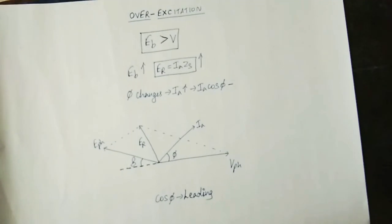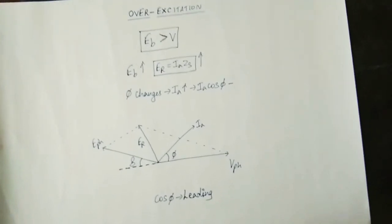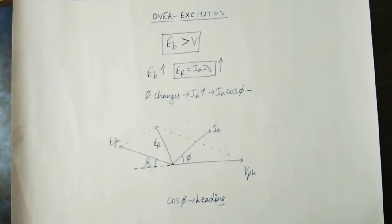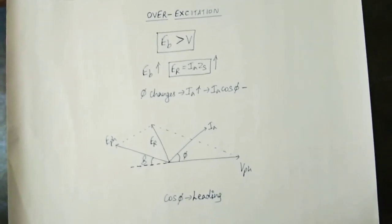If you adjust the field winding, we will talk about the input voltage. Then, we will talk about over excitation.